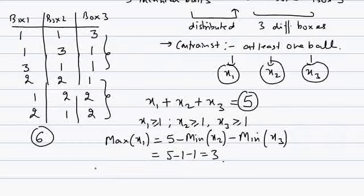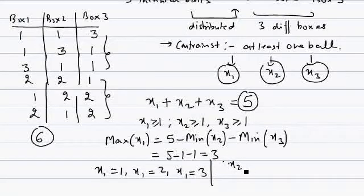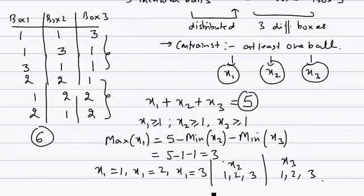So 5 minus 1 minus 1 equals 3, meaning max of x1 is 3. So x1 can take values 1, 2, or 3 — three possible values. Box one can get either one, two, or three balls. Similarly, the constraints are symmetric across all three boxes, so x2 can also be 1, 2, or 3, and x3 can also be 1, 2, or 3.